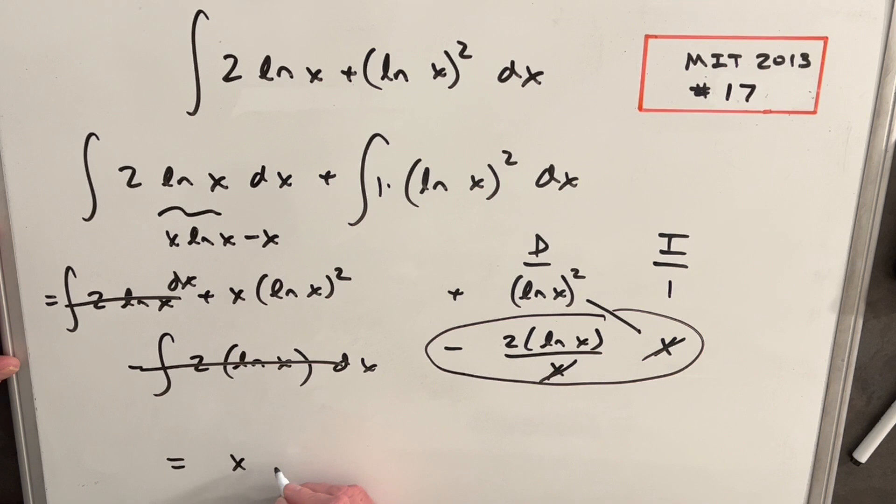We're left with just our final answer, which is going to be x ln x all squared plus c. So that's it. The cancellation makes it pretty easy. Thank you for watching. Please like and subscribe. Have a great day.